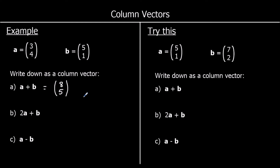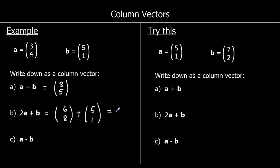How about 2A plus B? So we do A twice and then B. Two A's, if I double A, would be 6, 8. And we're going to add that to a B, which is 5, 1. So how far have we gone to the right? 6 plus 5 is 11. And how far up? 8 plus 1 is 9. So if we did 2A and then a B, we go to the right 11 and then up 9.